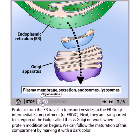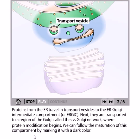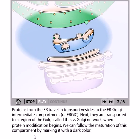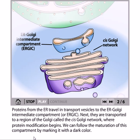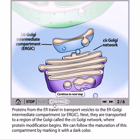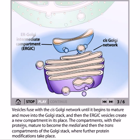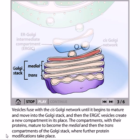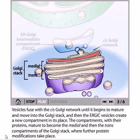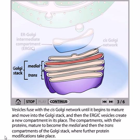Proteins from the ER travel in transport vesicles to the ER-Golgi intermediate compartments, or ERGIC. Next, they are transported to the cis-Golgi network where protein modification begins, which we can observe in transmission electron microscopic analysis. Vesicles fuse with the cis-Golgi network until it matures and moves into the Golgi stack, while new ERGIC vesicles create new compartments in its place. The compartments then mature to become the medial and trans compartments of the Golgi stack, where further protein modifications take place.